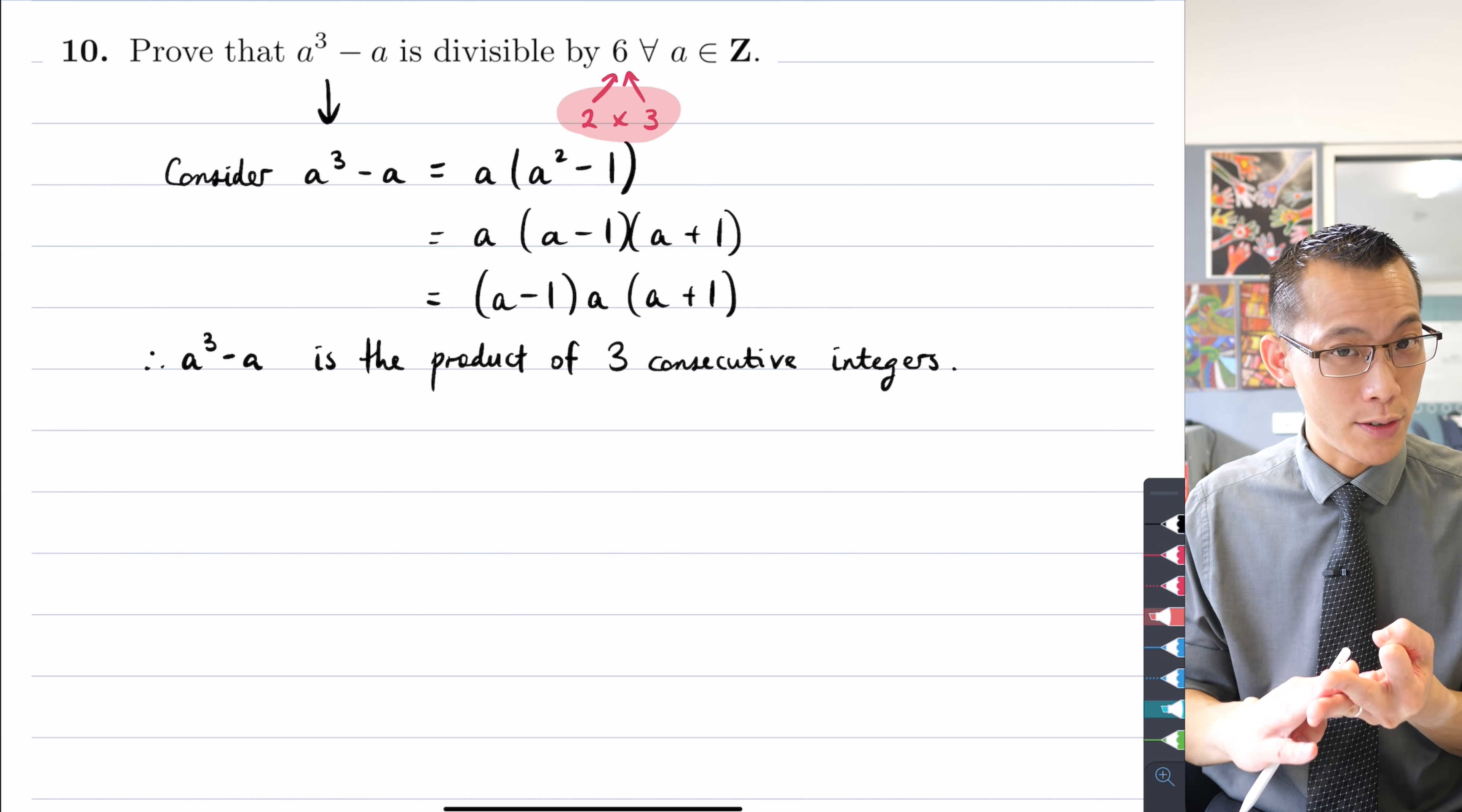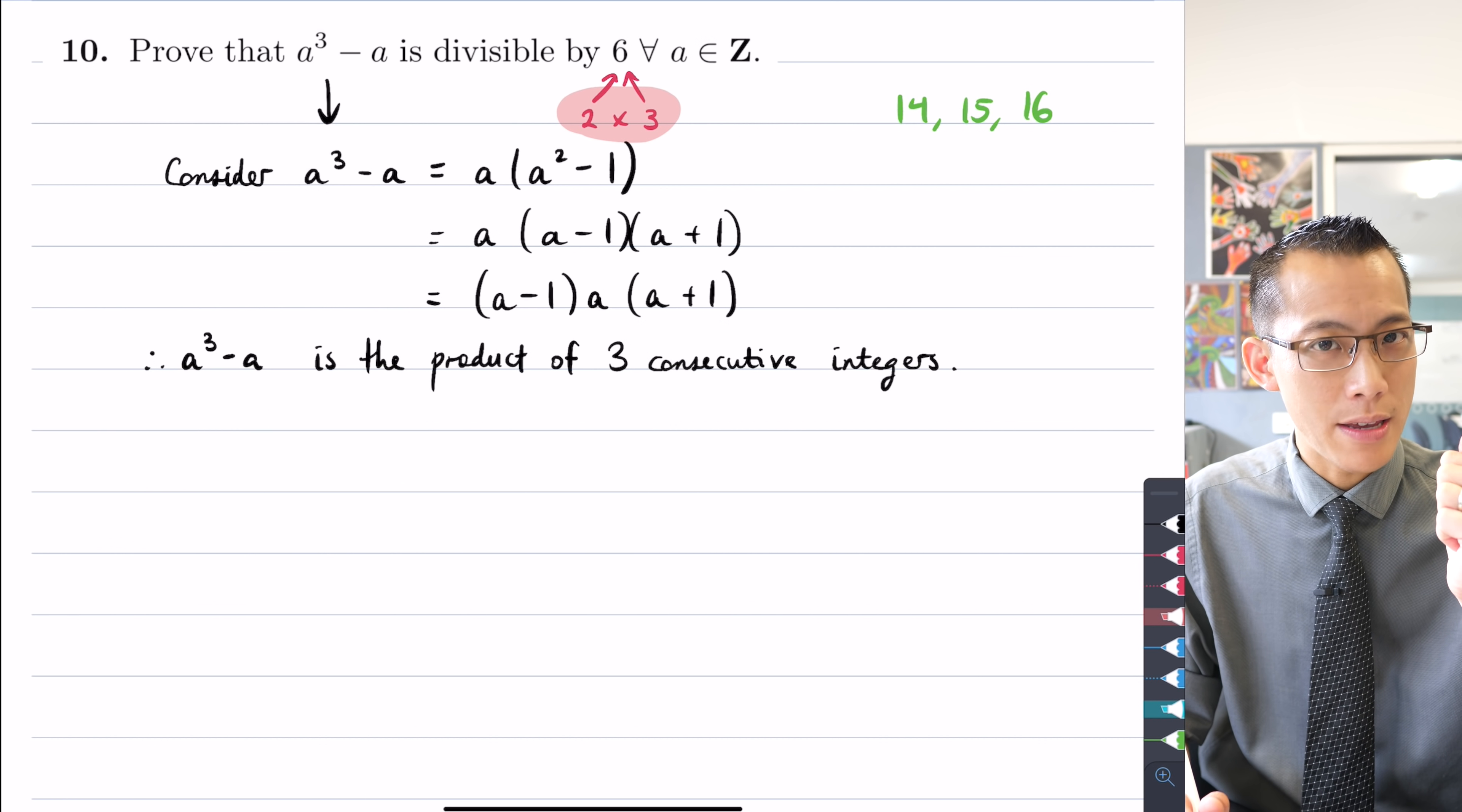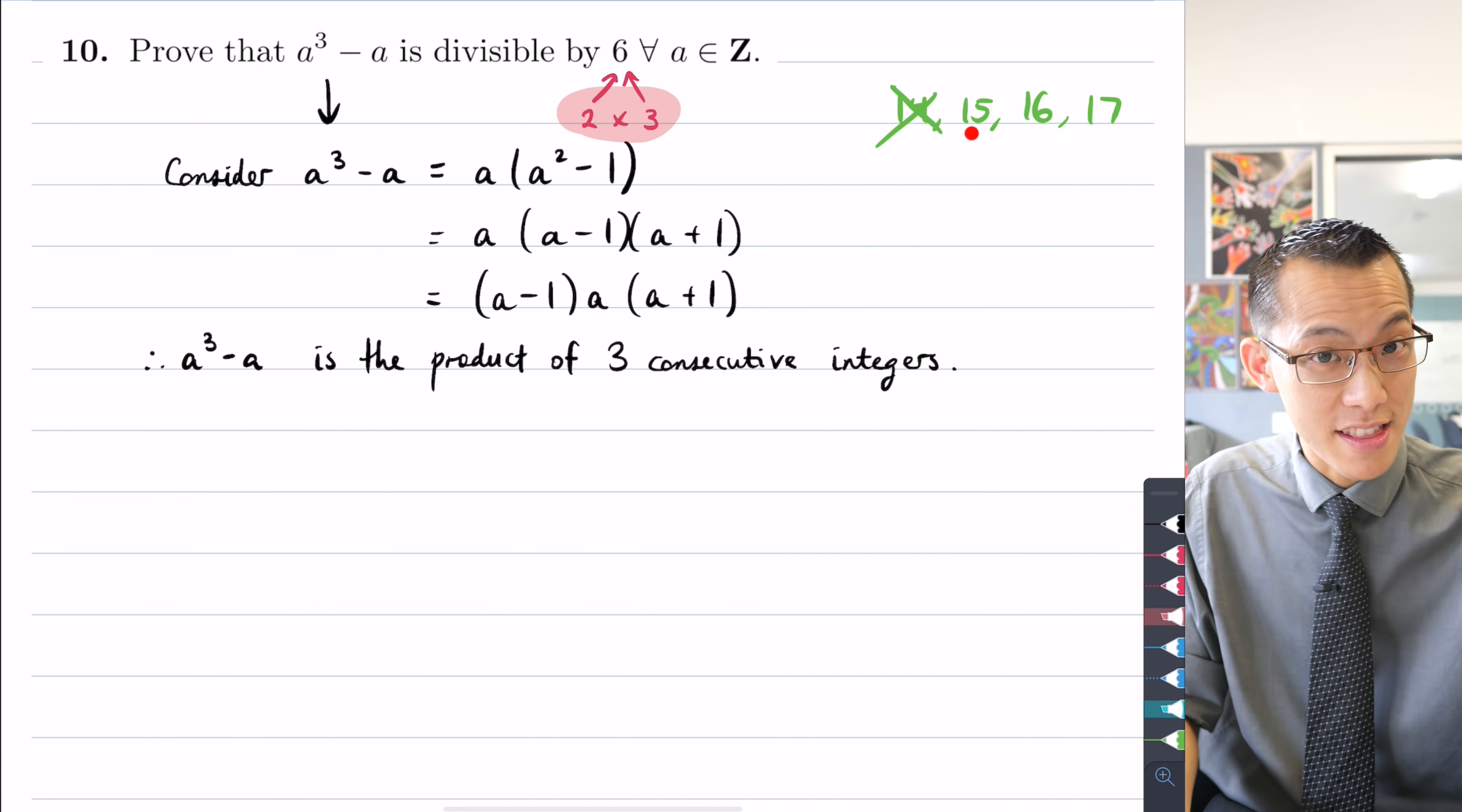Now if you just think about this, maybe an example would be instructive here. If you thought of three consecutive integers, any three consecutive integers like say I don't know, 14, 15, 16, what you see here is if you pick any three consecutive integers, at least one of them is going to be even—in this case I've got 14 and 16, they're both even right? But if I went along to the next one, let's suppose I scrapped 14 and I consider the next one, you can see here even though I don't have 14 anymore, 16 is still there. So you're always going to have at least one number that's a multiple of 2, and because you've got three numbers you also will always have a number that's a multiple of 3—in this case it's 15.